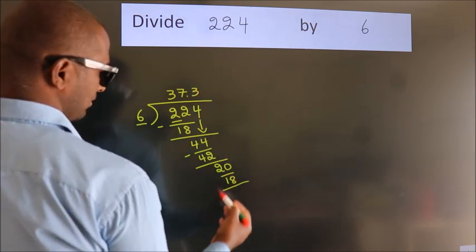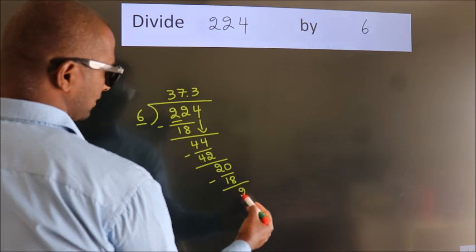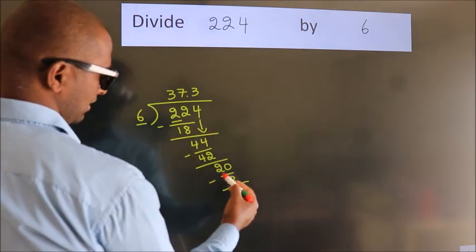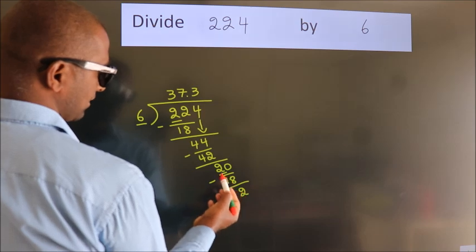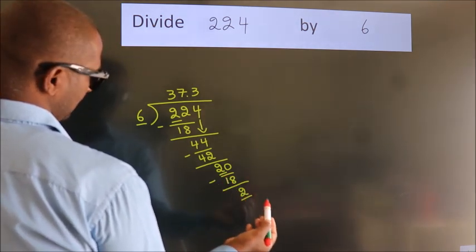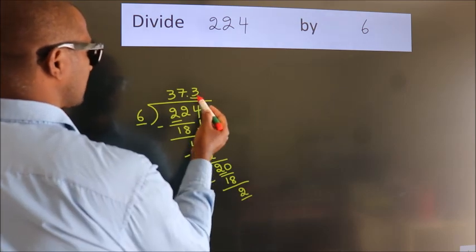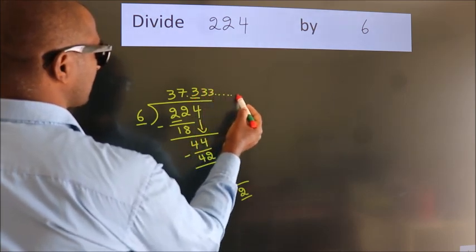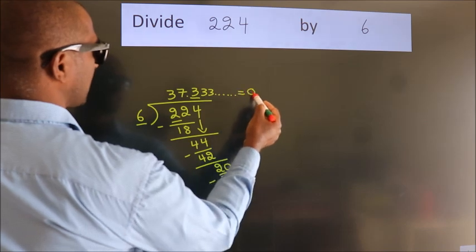Now we subtract. We get 2. Now you observe: we had 2 here, and we got 2 again. That means this number keeps on repeating. So this is our quotient.